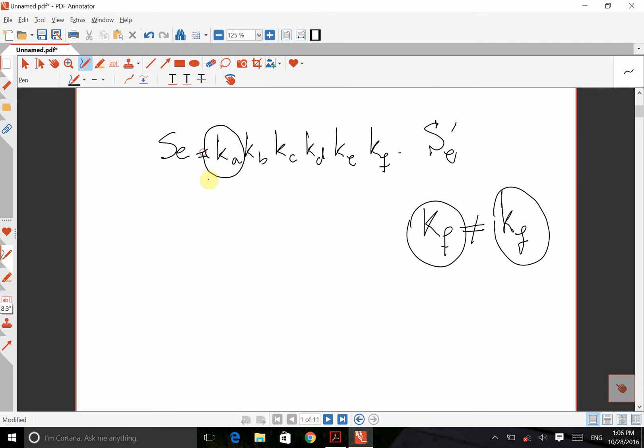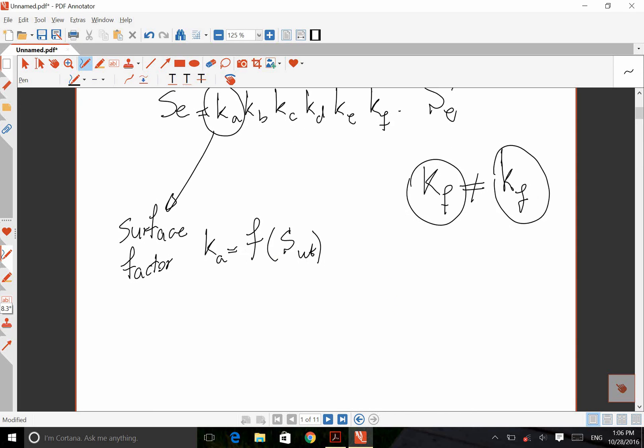So I'm going to talk about all these factors, how to find them, what they are. The first one is called surface factor. Surface factor, KA, is a function of material. So it's a function of SUT. In order to find KA, you need to use this equation, A times SU to the power of B. So this coefficient A and the exponent B has to be found from some table. In 10th edition of Shigley's book, the number of this table is 6-2. So these two numbers can be found from table 6-2.